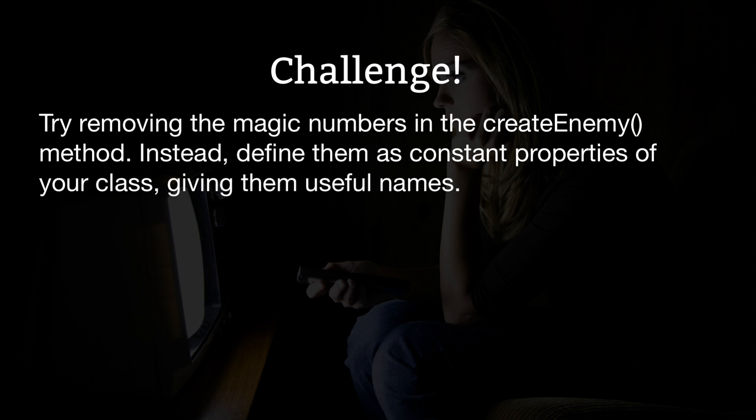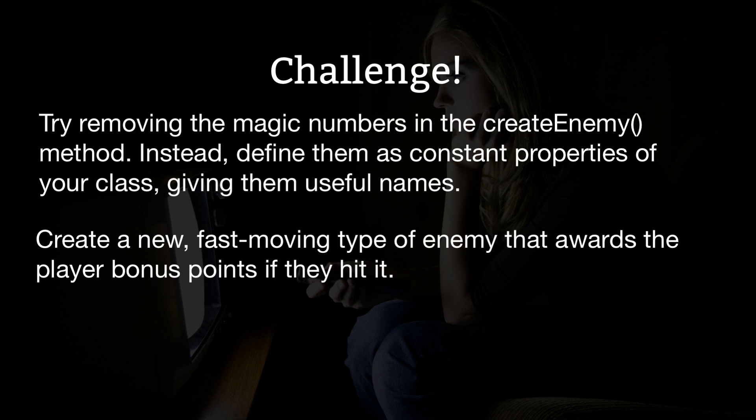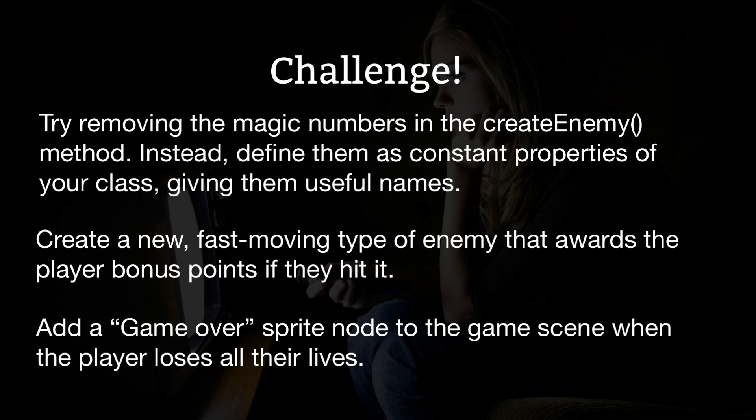One of the best ways to learn is to write your own code as often as possible, so here are three ways you can put your newfound knowledge to use straight away. First, try removing the magic numbers in the createEnemy method — instead, define them as constant properties of your class, giving them useful names. Second, create a new fast-moving type of enemy that awards the player bonus points if they hit it. Third, add a game over sprite node to the game scene when the player loses all their lives.